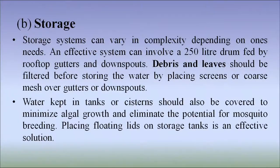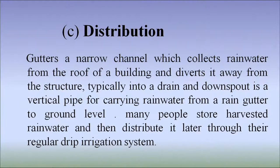The next component is storage. A storage system can vary in complexity depending on one's needs. An effective system can involve a 250-litre drum fed by rooftop gutters and downspouts. Debris and leaves should be filtered before storing the water by placing screens or coarse mesh over gutters or downspouts. Water kept in tanks or systems should also be covered to minimize algal growth and eliminate the potential for mosquito breeding. Placing floating lids on storage tanks is an effective solution. For distribution, gutters or narrow channels collect rainwater from the roof of a building and divert it away from the structure, typically into a drain, and downspouts are vertical pipes for carrying rainwater from rain gutters to ground level. Many people store harvested rainwater and then distribute it later through their regular drip irrigation system.